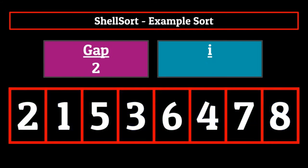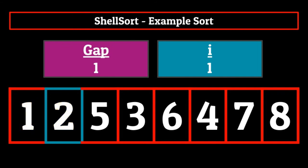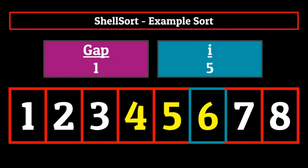Now we go back to the initial for loop and recalculate the gap one more time, dividing by two so that it is one. The final step is to simply start I at index location one and perform a basic insertion sort. One goes in its place by swapping with two. Five is currently in its correct place, so we don't need to do anything there. Three gets swapped with five, putting it in its correct location. Six is currently in its correct location. We place four in between three and five, putting it in its correct location. And finally, seven and eight are already in their correct order, and so we are finished. That's how you sort a list using shell sort.